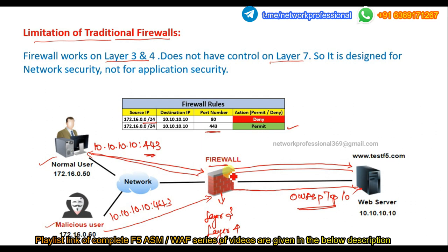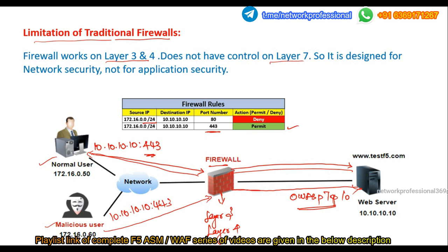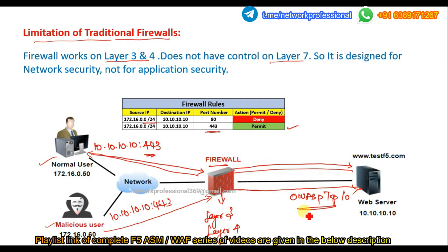The firewall easily passes these requests, and once they reach the destination, the malicious content manipulates the information there and the server starts to work the way the malicious user wants. This is the main limitation and drawback of using a traditional firewall. Yes, it is useful — the traditional firewall is used in many places providing network security using IP address and port number. However, when it comes to application security, the legacy firewall cannot protect applications. This is how hackers can easily pass through the firewall and compromise the server, because they work on the top layer — layer 7, not layer 3 and layer 4.